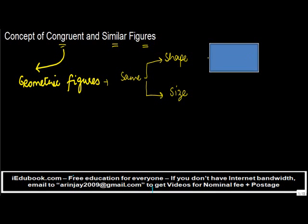So what I've done here is I've added a rectangle over here. Let me call this as A, B, C, D. When we say that two geometric figures are congruent, let's call this as Figure 1. Two geometric figures are congruent when they have the same shape and the size.